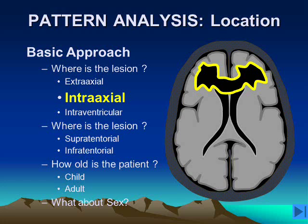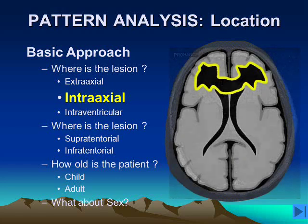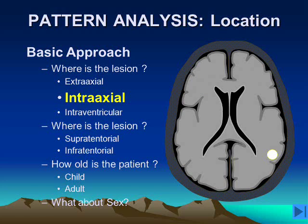A lesion in the corpus callosum has a very limited differential diagnosis. One possibility would be primary central nervous system lymphoma, as is seen here in this patient on the axial T1-weighted image post-gadolinium. Intra-axial lesions may also be nodular lesions just below the cortex, which is typical for hematogenous metastatic disease. Patients with hematogenous dissemination may have multiple lesions in a similar subcortical location just below the gray matter.